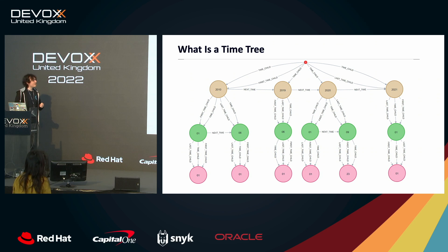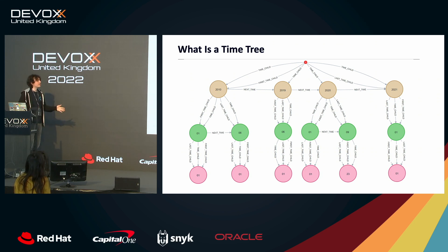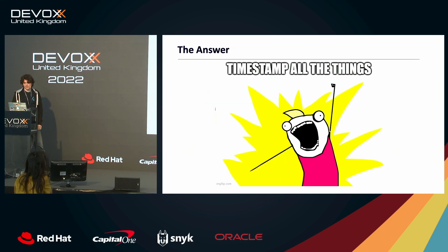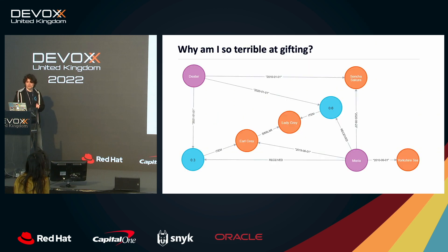Time trees are quite complicated and do increase query complexity. Depending on the graph database, each traversal is essentially a join, so doing this many times may not be ideal. For our examples we're just going to use JBOT.